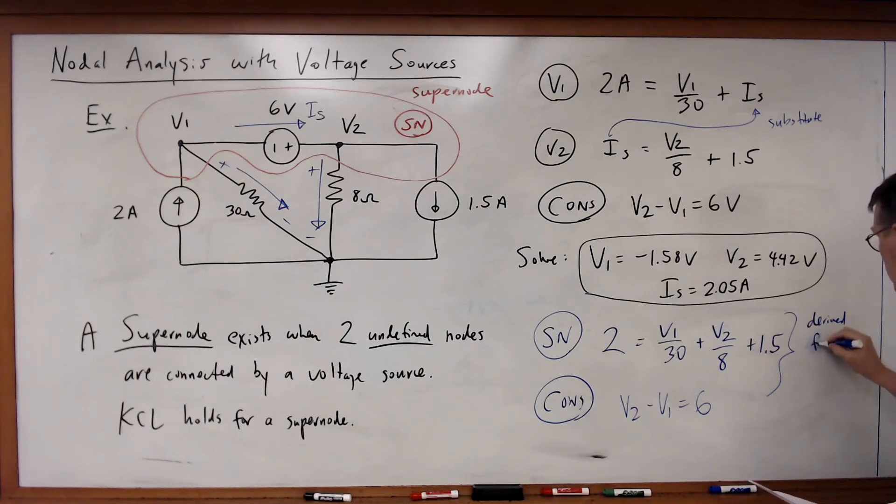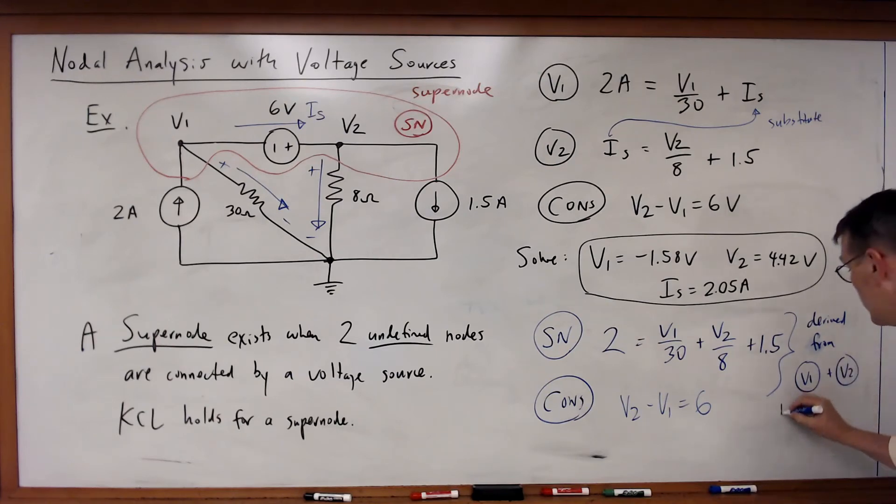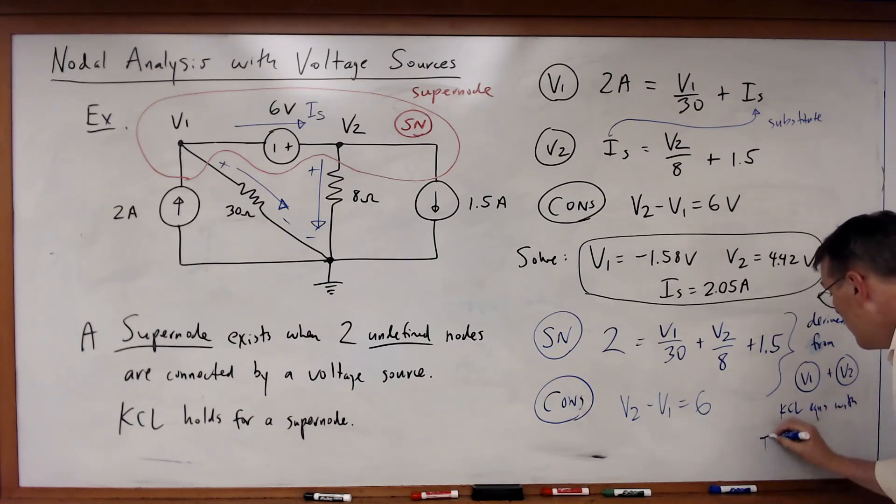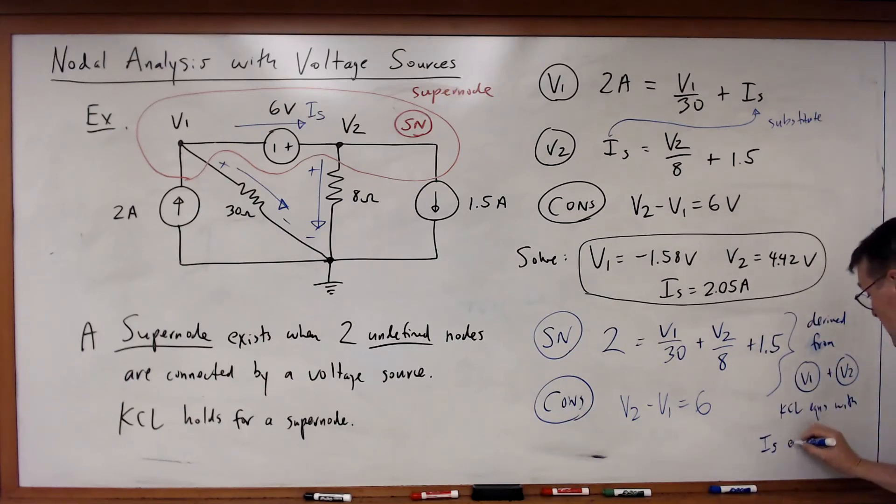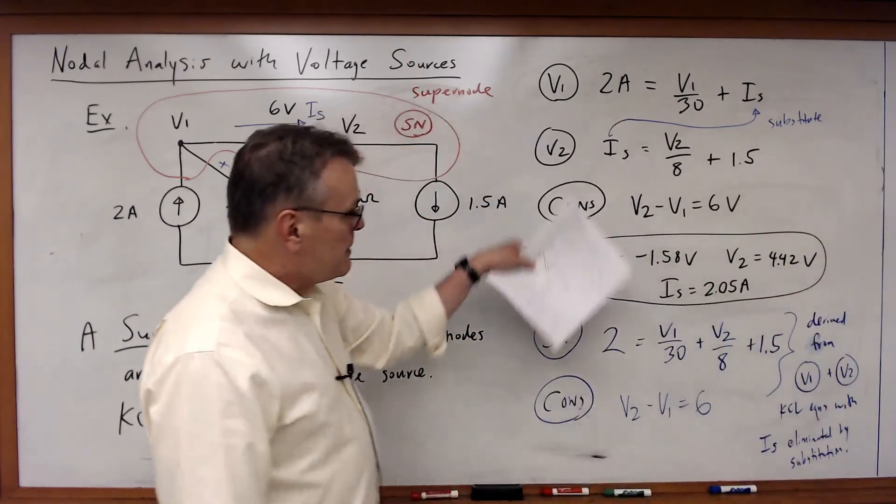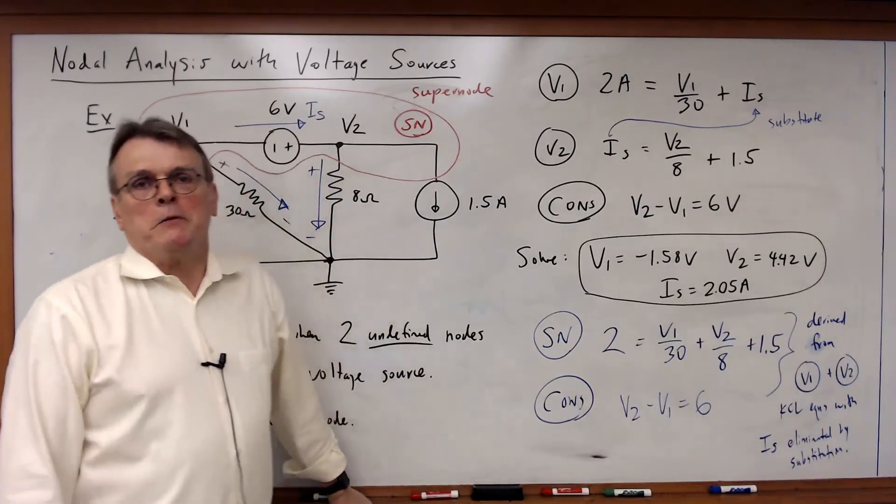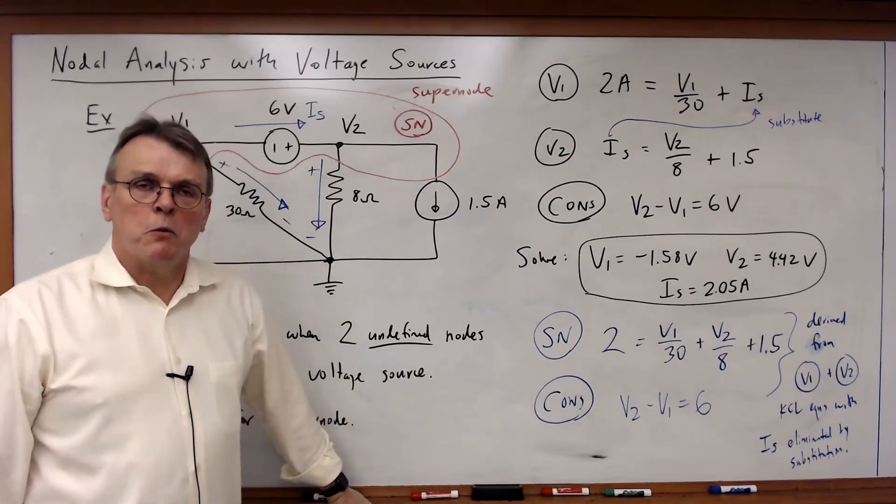So, this is derived from the V1 plus V2 KCL equations with the IS term eliminated by substitution. So, I actually have the same math. All I've done here is I've eliminated an equation and eliminated a variable in order to solve the problem.